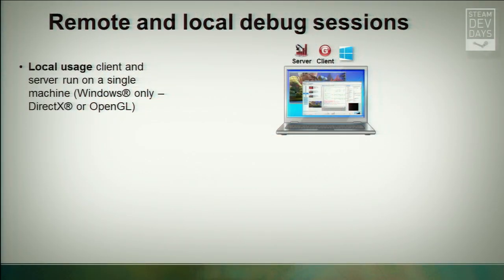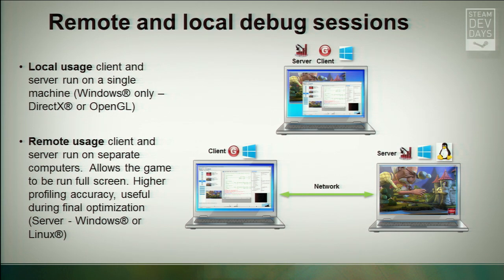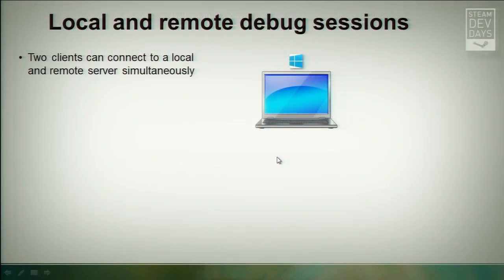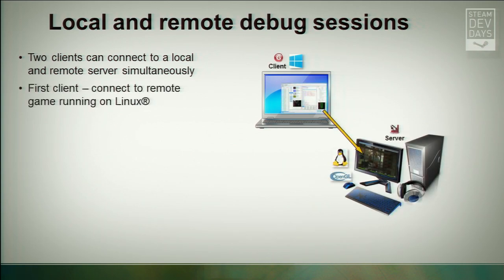One of the useful things about the tool is it can be used in different usage configurations. You can use it locally on one machine — the mode supported since the inception of the project, with the client and server running on a Windows machine. Or you can use it in remote usage mode, where the client and the server are running on two separate machines connected by the network. This now supports not only the Windows server, but the Linux server too. The advantage of running in this mode is you can run the game at full screen and get a more accurate profile of how your game is actually performing.